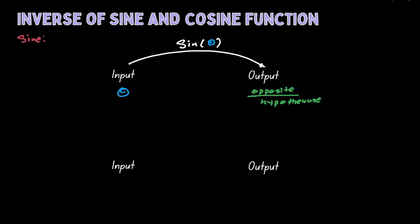The inverse function does the opposite. The input is the ratio and the output is the angle. The notation for sine inverse is sine with a little negative one on top of it. You can think of the inverse of sine as a function where you plug in the ratio and it will tell you what angle it comes from.